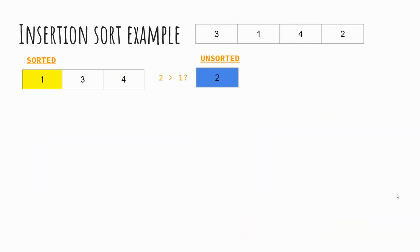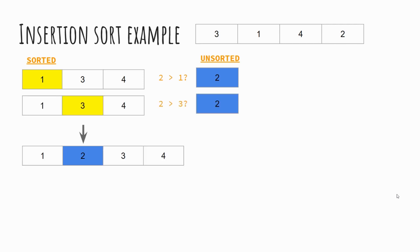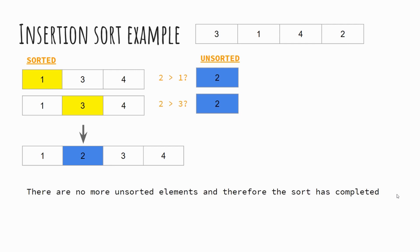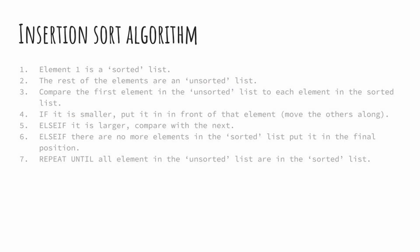Is two greater than one? Yes. Is two greater than three? No, it isn't. Therefore we insert two into our list here. There are no further unsorted elements, and therefore we can demonstrate that our list is sorted.